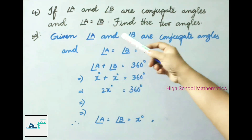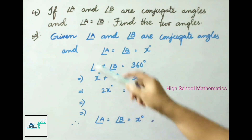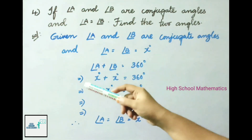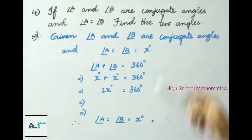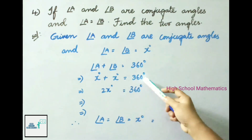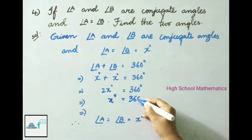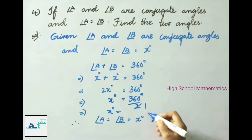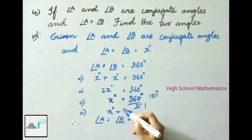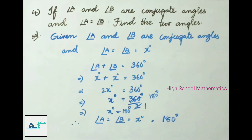Question number 4: if angle A and angle B are conjugate angles and angle A equals angle B, find the two angles. Let angle A equal angle B equal X degrees. Since conjugate angles sum to 360 degrees, X plus X equals 360 degrees. That gives 2X equals 360 degrees, so X equals 360 divided by 2, which is 180 degrees. Therefore angle A equals angle B equals 180 degrees — the two angles are 180 degrees each.